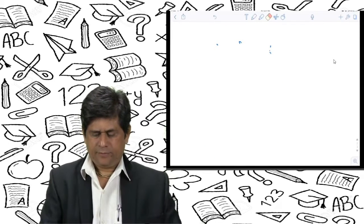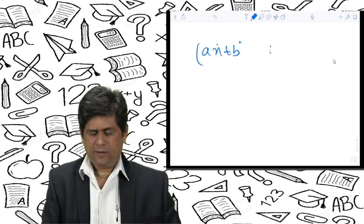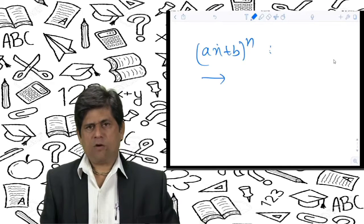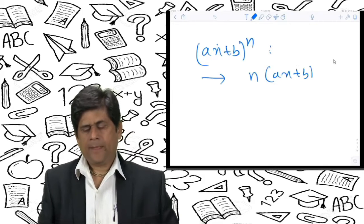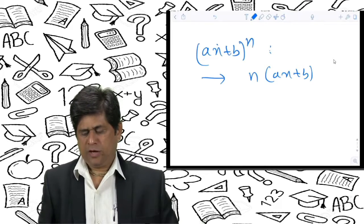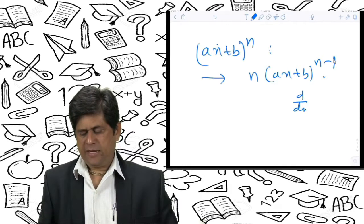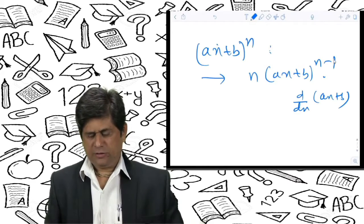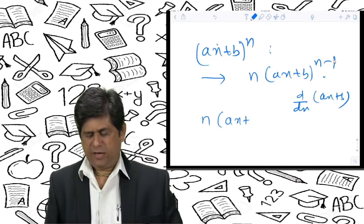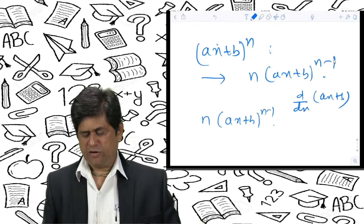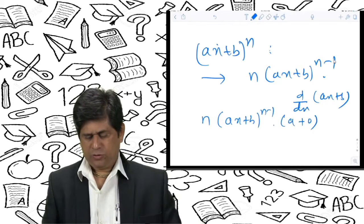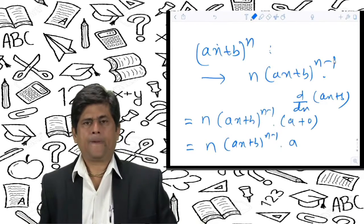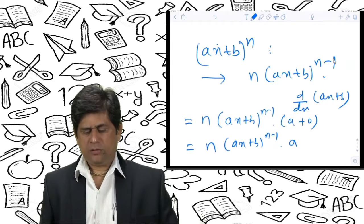Now if we have another function such as (ax + b)ⁿ, how do we find its derivative? The formula is: n·(ax + b)ⁿ⁻¹ · d/dx(ax + b). This is also called the derivative of a composite function. The derivative of (ax + b) is a, so the result is n·(ax + b)ⁿ⁻¹ · a.